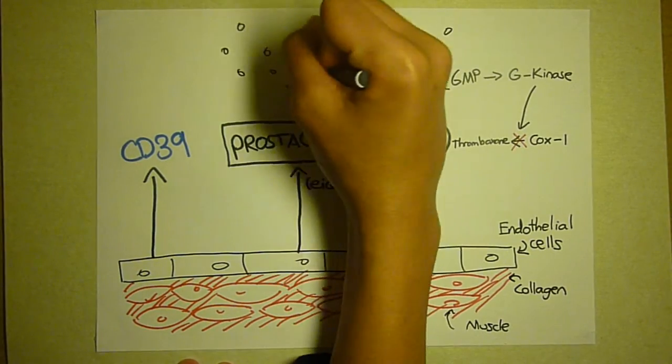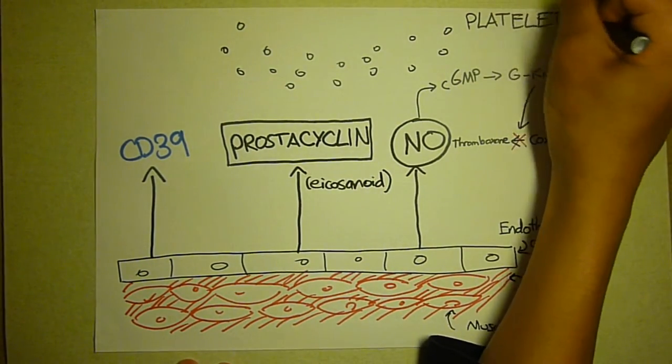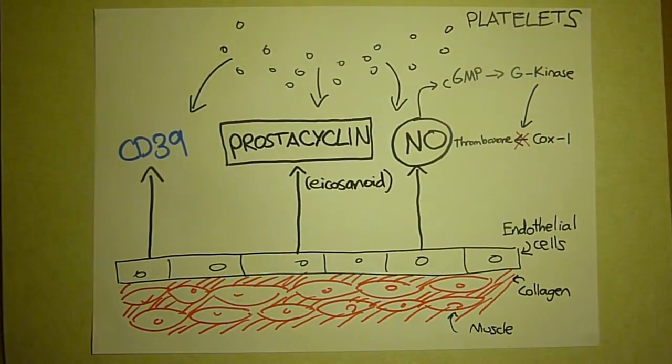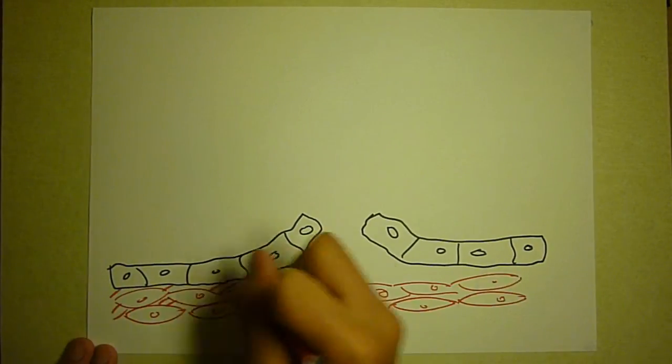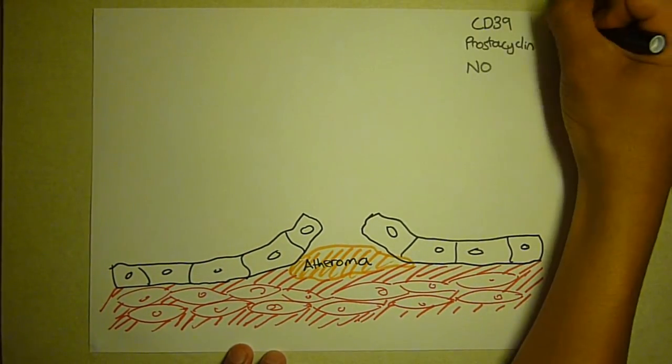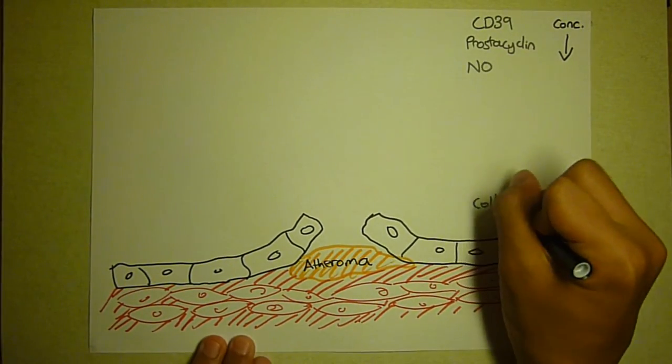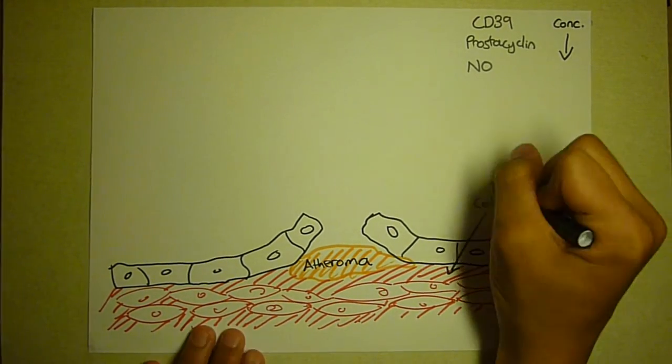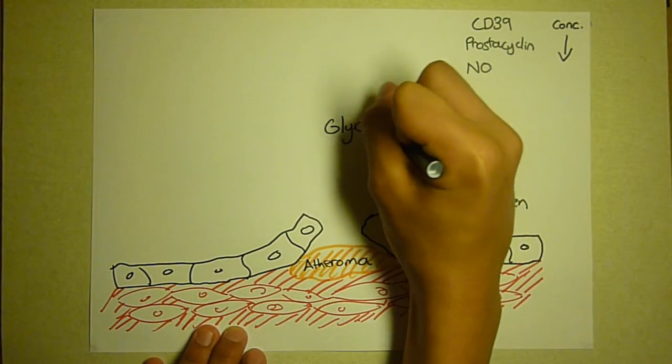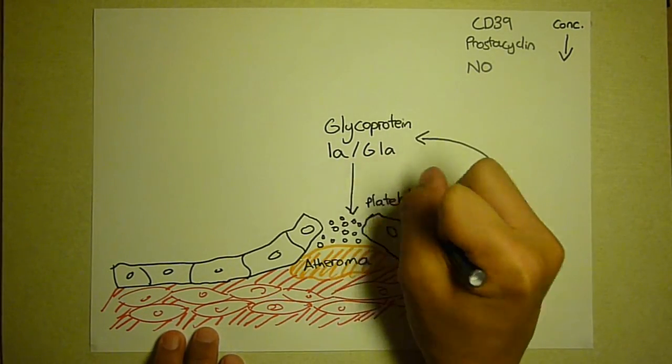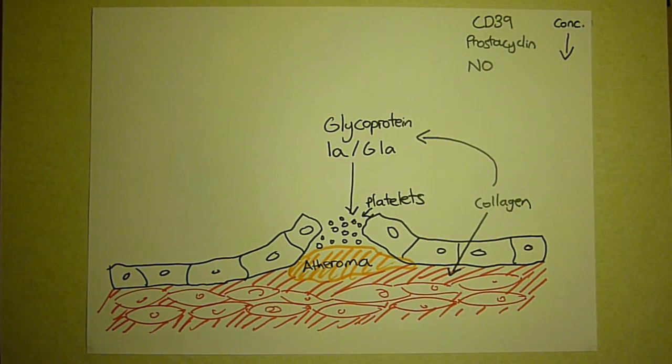These inhibit the adhesion of platelets, fragments of the cytoplasm, to the endothelial cells. When the tissue ruptures, the concentration of these substances drops. The collagen layer underneath the endothelium cells is exposed, which releases another chemical called GP1A, to allow the platelets to stick to the arterial wall.